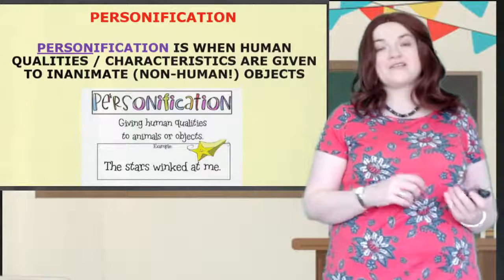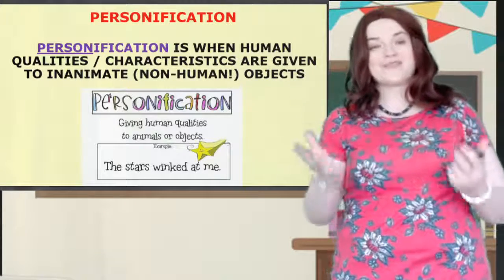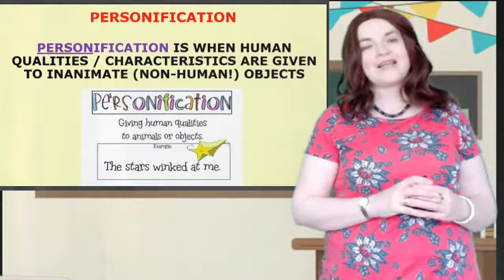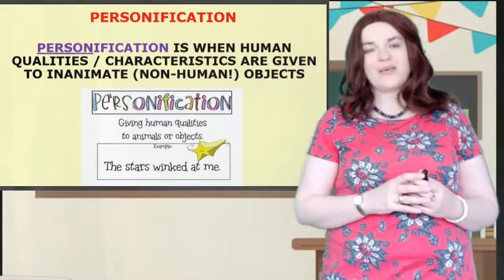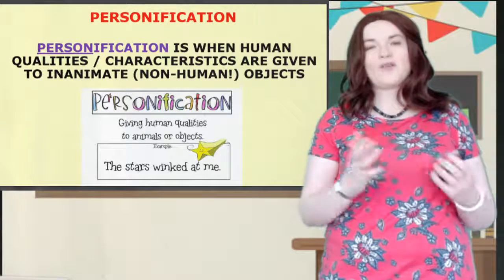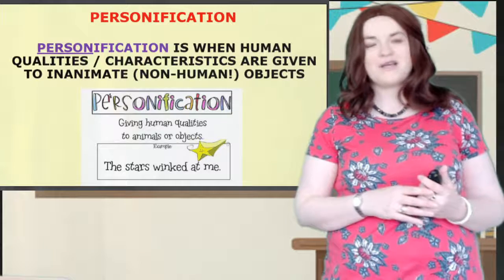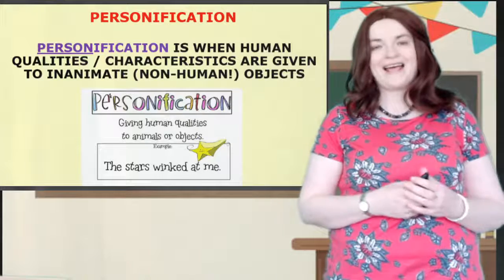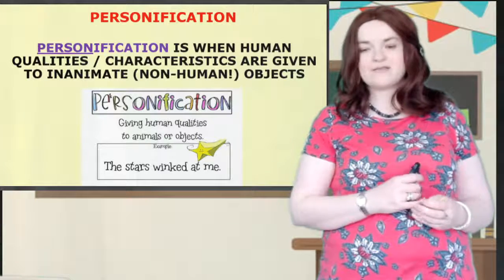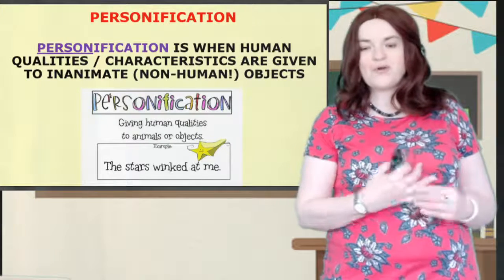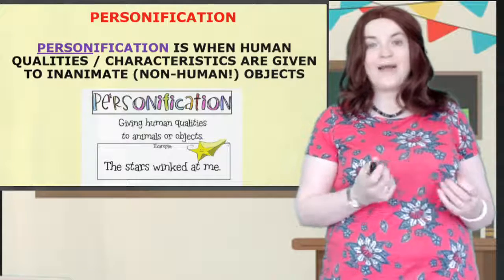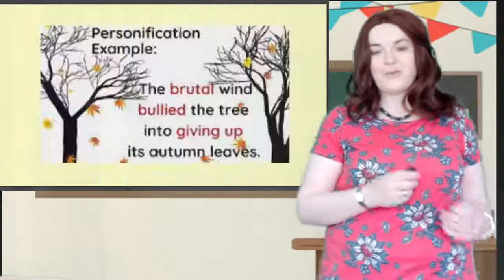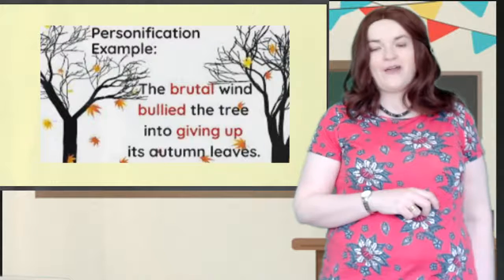Right, personification. You can see the word 'person' is in there and that's a massive clue to what this technique is. Basically it's when you give human qualities or human characteristics to things that are not human — non-human, inanimate objects. For example: the stars winked at me. They didn't actually wink at you, did they? No.